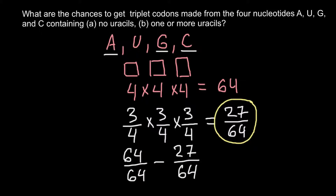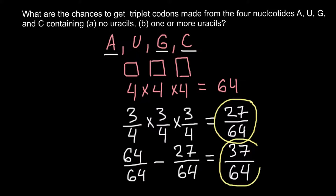That means the rest would contain at least one uracil — one, two, or three. Since 64/64 equals 1, when we subtract 27/64 from 1, we get the answer: 37 out of 64 different combinations can make a triplet with at least one uracil. This is our answer for the second question.